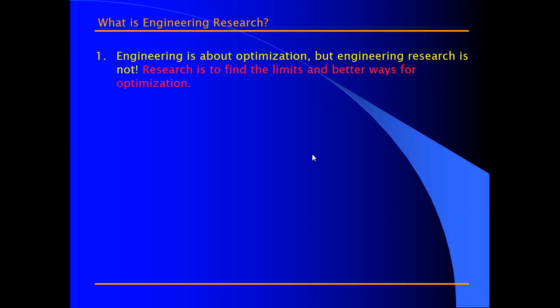What is engineering research? Engineering is about optimization, but engineering research is not. Research is to find the limits and better ways for optimization, which means that suppose if one person has written a research paper, I have to add up something, I have to mix up something, I have to give some experiments on that thing to find a new way in order to solve that problem, in order to find more optimized solution to that problem.